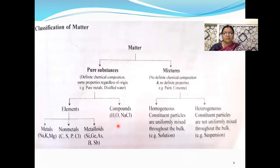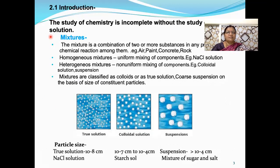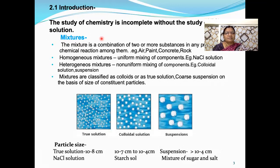Mixtures may be homogeneous or heterogeneous. A homogeneous mixture means the constituent particles are uniformly mixed throughout the bulk — the example is a solution, which we are going to study today. In a heterogeneous mixture, the constituent particles are not uniformly mixed. The study of solution is important in chemistry because in practical work you are familiar with different solutions like NaOH solution and oxalic acid solution. Without the study of solution, the study of chemistry is incomplete.